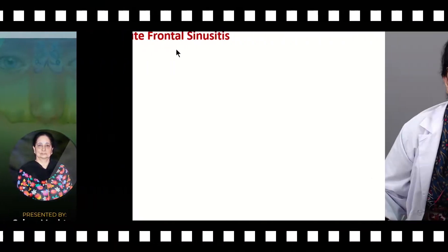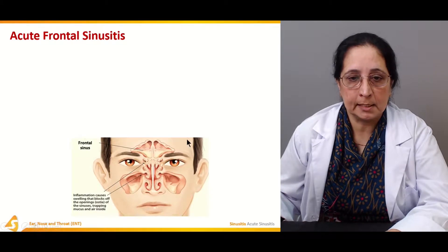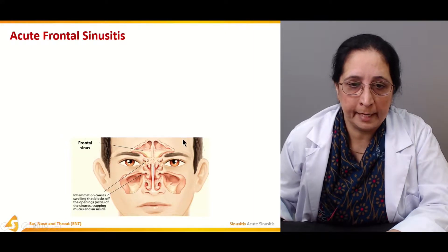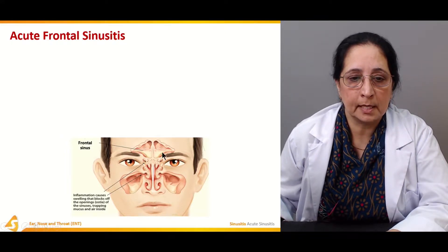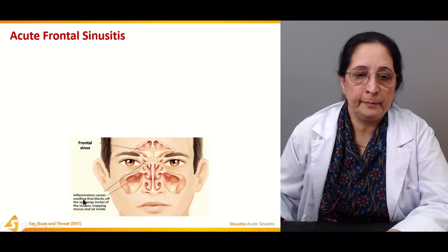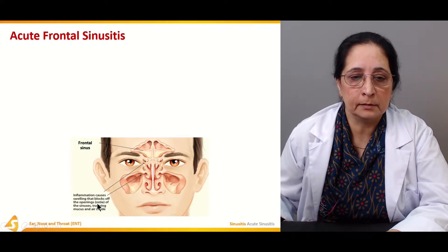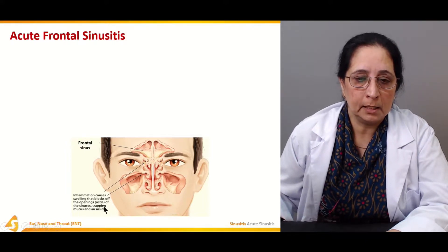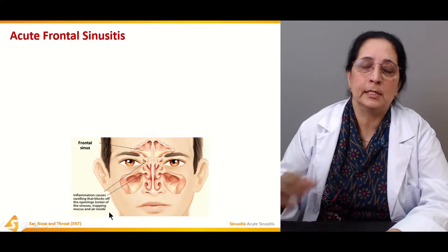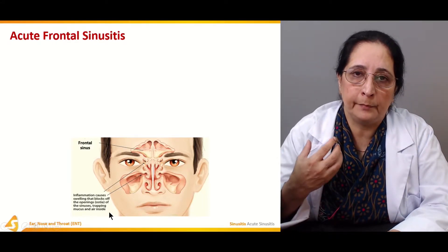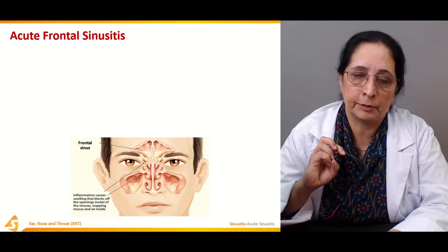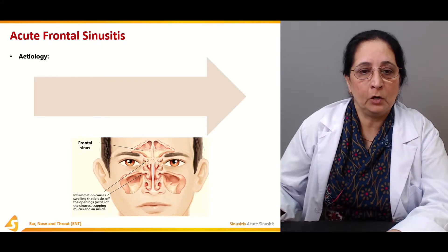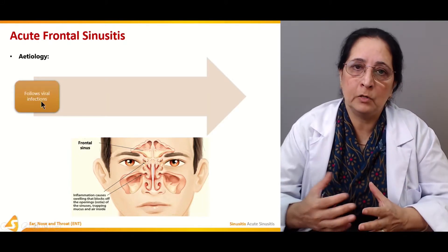In acute frontal sinusitis, the frontal sinuses become inflamed. This inflammation causes swelling that blocks the opening — the ostia — of the sinuses, trapping mucus inside. When the ostia is blocked, the mucus is trapped and causes severe symptoms.